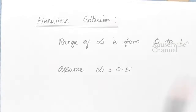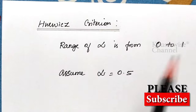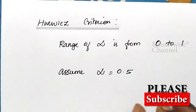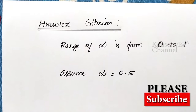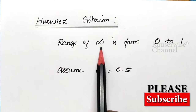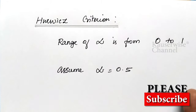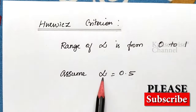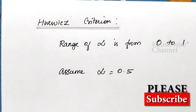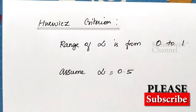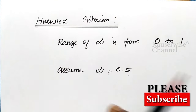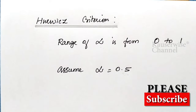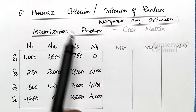Under Horvitch criterion, the range of alpha is from 0 to 1. The alpha value is decided depending on the decision-making situation and will generally be given in the problem. If no alpha value is mentioned, you can assume alpha equals 0.5. Now let us see the minimization problem under Horvitch criterion.